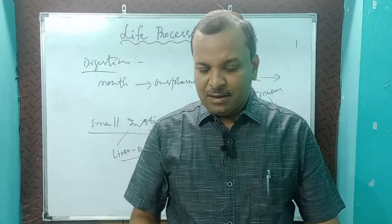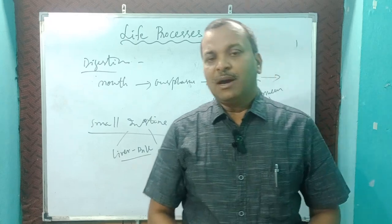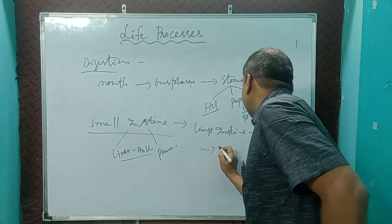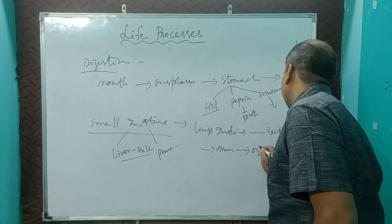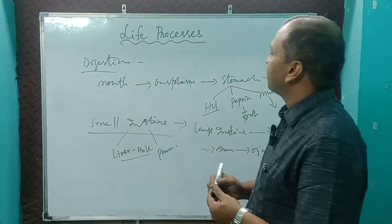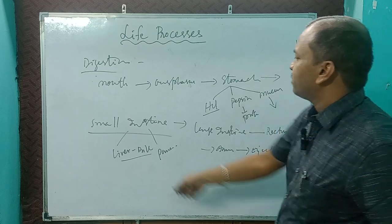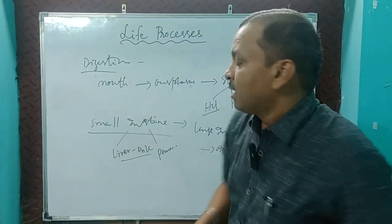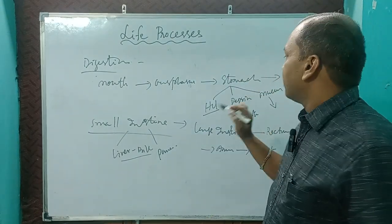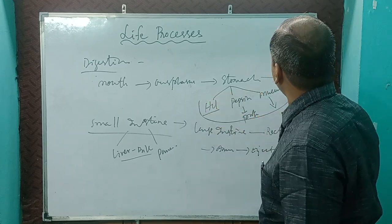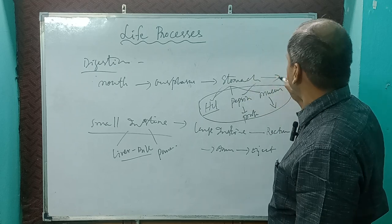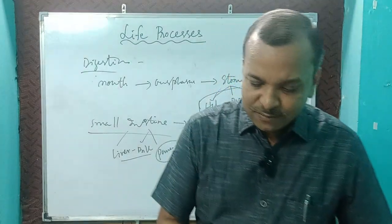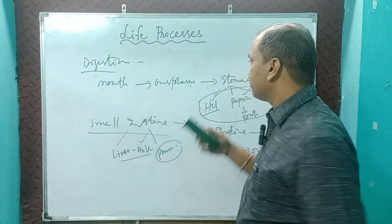Some undigested food particles will go to the large intestine, then from the large intestine to the rectum, and from the rectum to the anus for ejection. The full path is: mouth → esophagus → stomach → small intestine → large intestine → rectum → anus. Remember: HCl, pepsin, mucus in the stomach; bile juice and pancreatic juice in the small intestine.